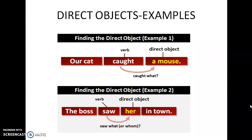Direct object examples. 'Our cat caught a mouse.' Our cat is the subject. Is there an action word? Yes — caught. Our cat caught what? A mouse. A mouse is the direct object; mouse is receiving the action caught. 'The boss saw her in town.' The boss is the subject. Is there an action word? Yes — saw. What does the boss see? Her. So her is the direct object — her is receiving the action saw. These are the direct objects in sentences.